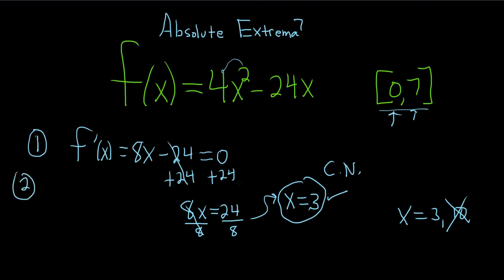All right. The next step is to take your critical number from step 1 and both of your endpoints, so the 0 and the 7, and plug them all back into the original. So let's do that. So let's see. So f of 0 is going to be 4 times 0 squared minus 24 times 0. So that's just 0.